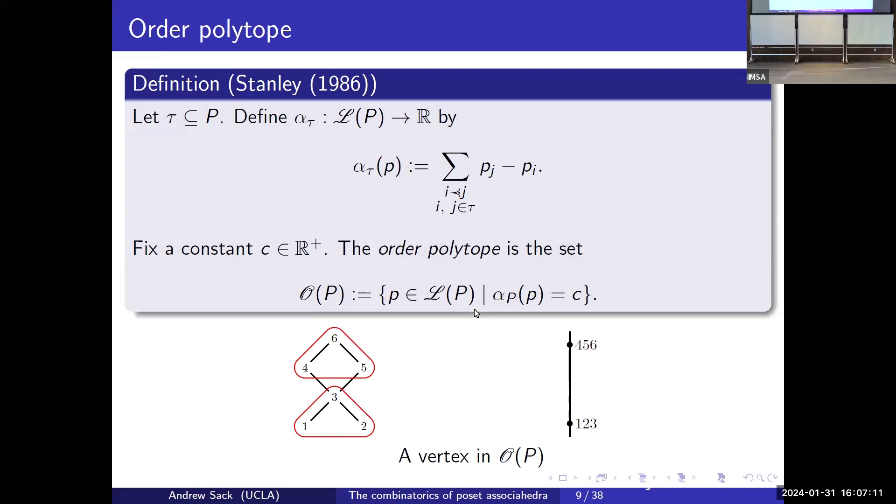Here's a point in the order cone of this poset, and what this mod condition means is if I slide the entire picture up or down, it's still the same point. Now here we have a very special function that matters to this realization, which is the alpha functional defined for any subset tau of our poset. And it is the sum of the differences of the coordinates that lie inside that subset.